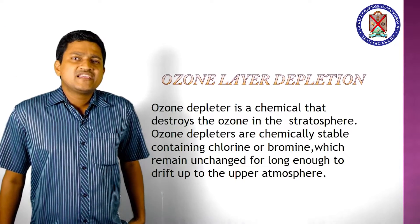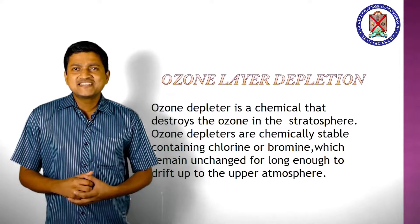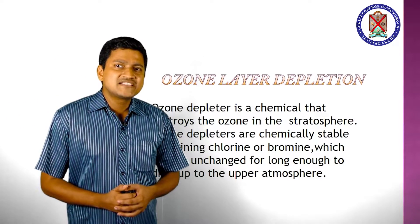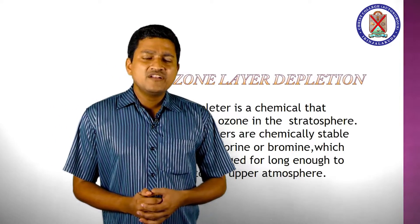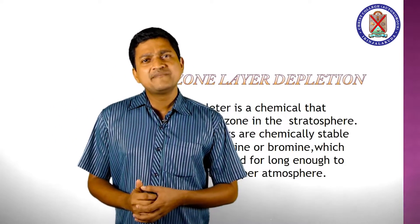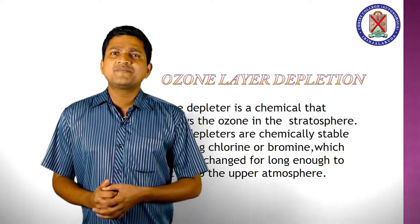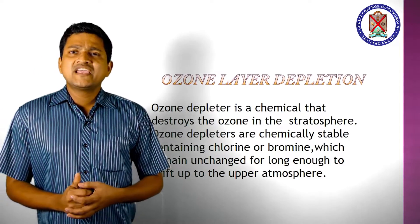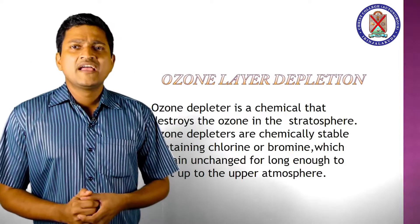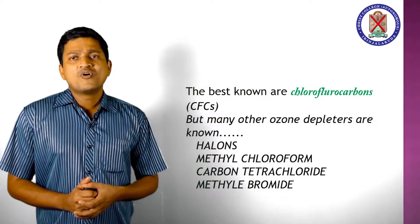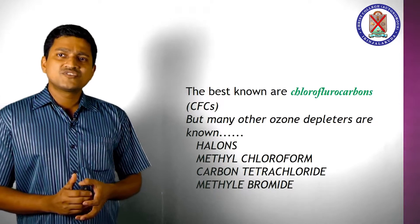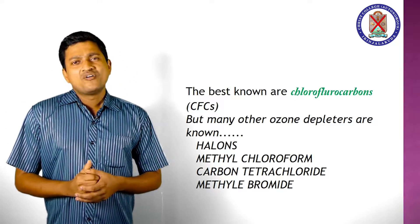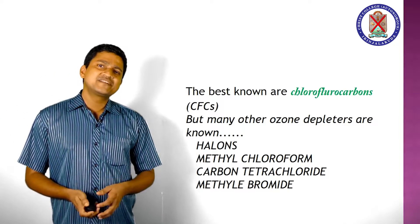Next we discuss about ozone depleters. An ozone depleter is a chemical that destroys the ozone in the stratosphere. Ozone depleters are chemically stable, containing chlorine or bromine, and remain unchanged long enough to drift up to the upper atmosphere. Once there, they are broken up by intense solar radiation and form a cocktail of more active substances, which then react with the ozone, causing depletion.